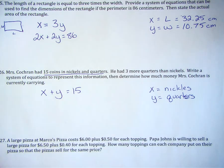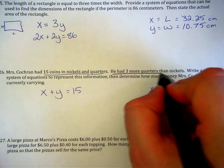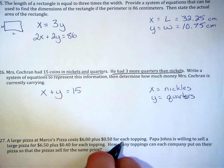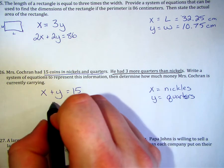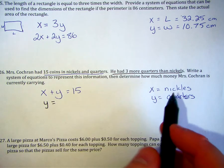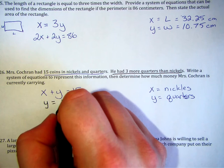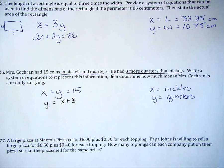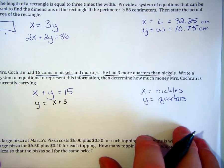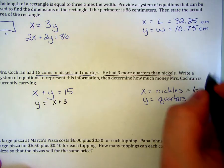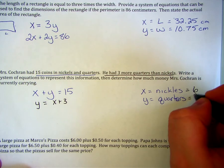We also know then, he had three more quarters than nickels. So, we're going to end up with our y being equal to our number of quarters is three more than the nickels. Again, I'm going to let you solve the system of equations. You should determine that the x value, which are nickels, he ends up with six of. The y value, which are quarters, he ends up with nine of.